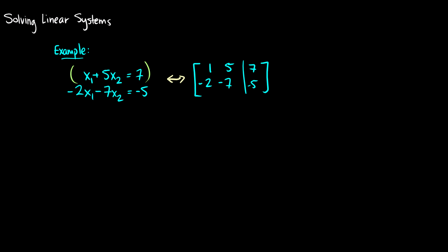In this video we're going to learn how to solve linear systems. Here's an example: x1 plus 5x2 is equal to 7, negative 2x1 minus 7x2 is equal to negative 5, and I've converted it to a matrix so we can see how we do this at each step.